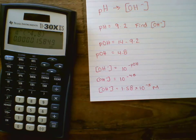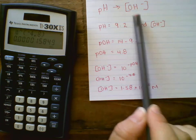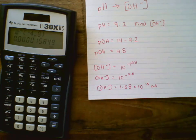So that's a two-step problem. You can do the same thing with a pOH to an H plus concentration. Either direction works, but it's going to require two steps.